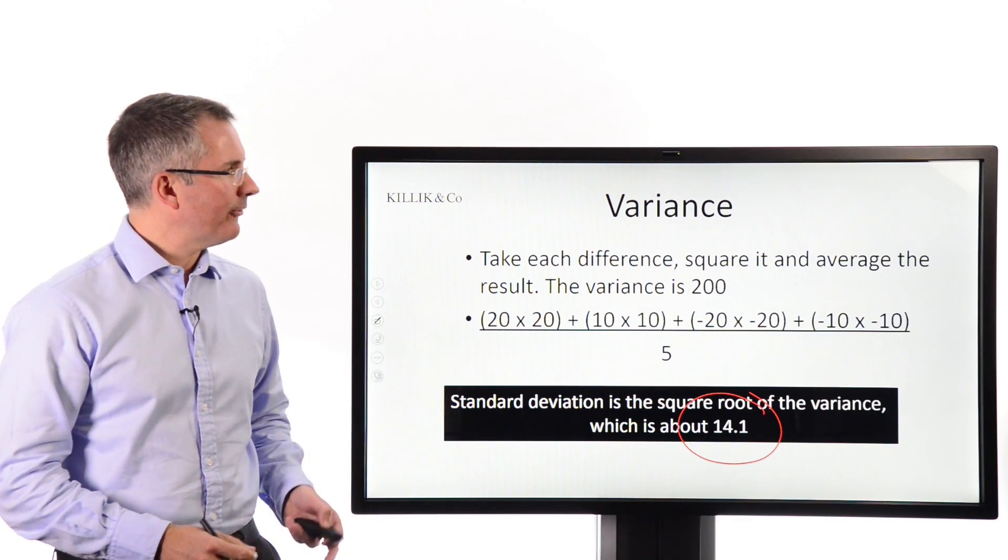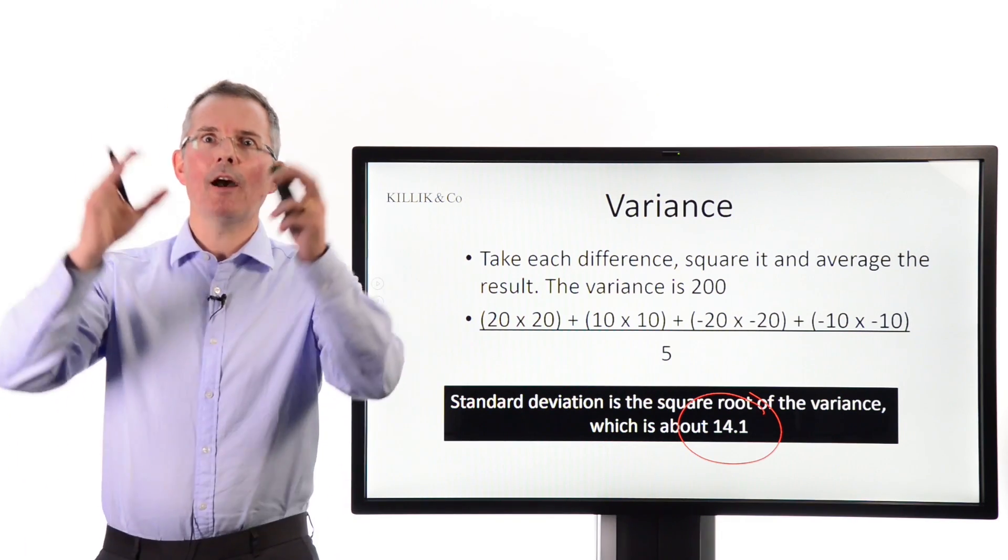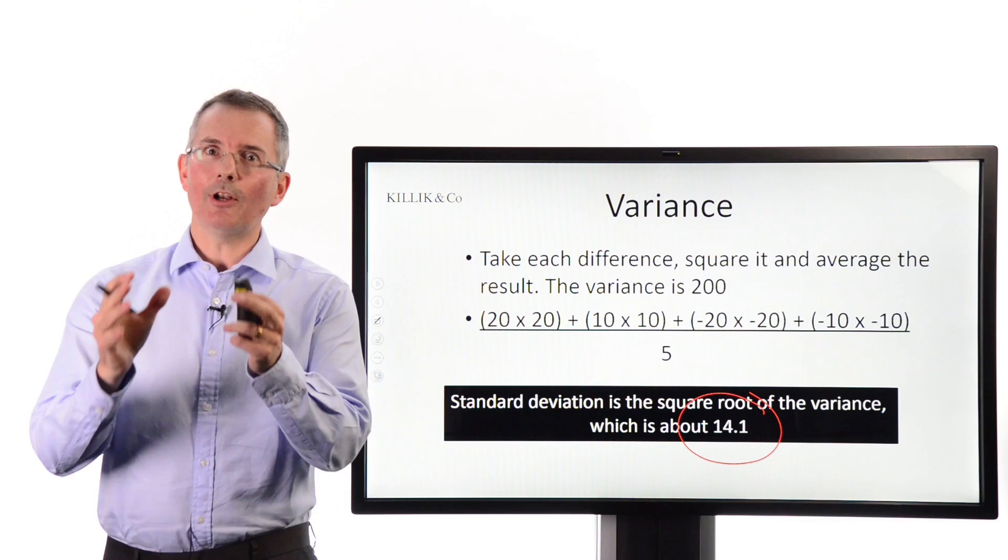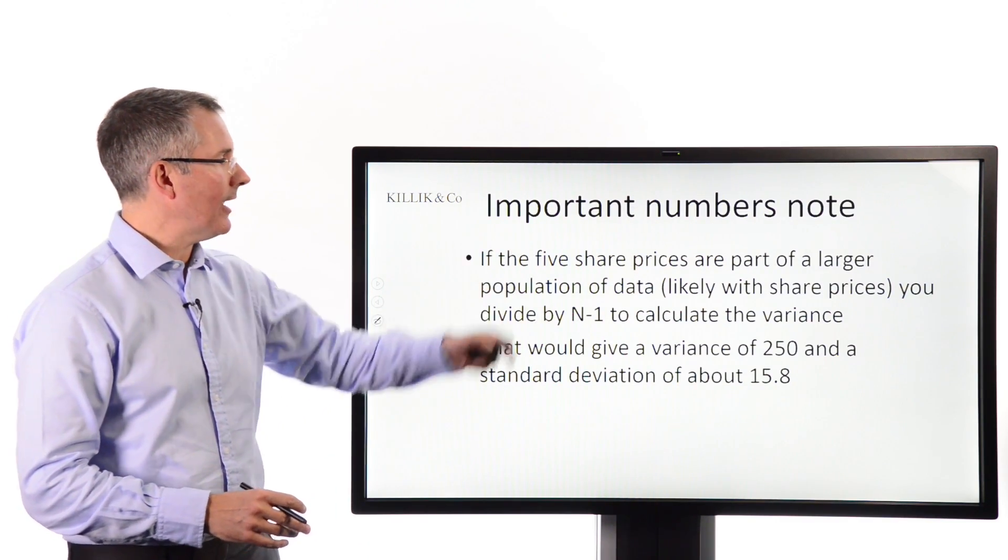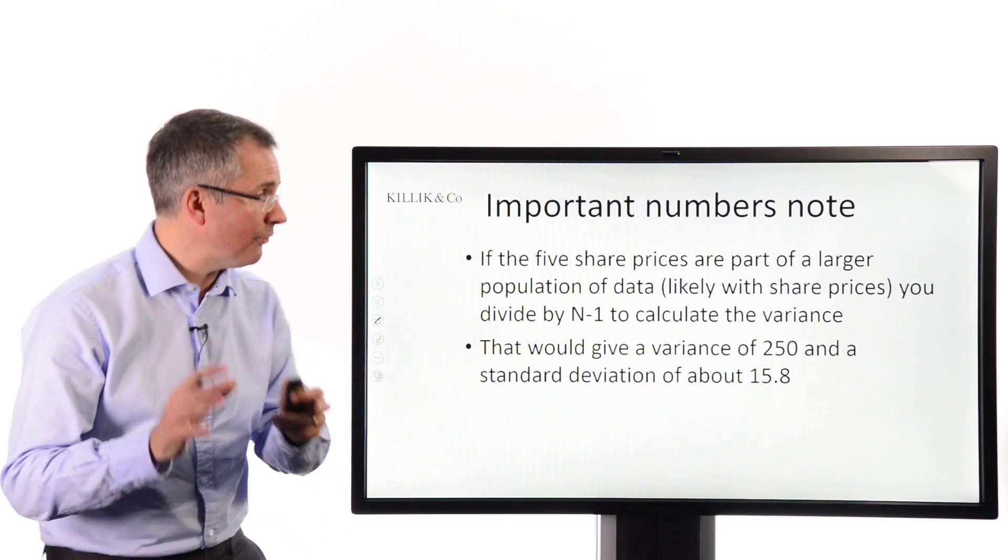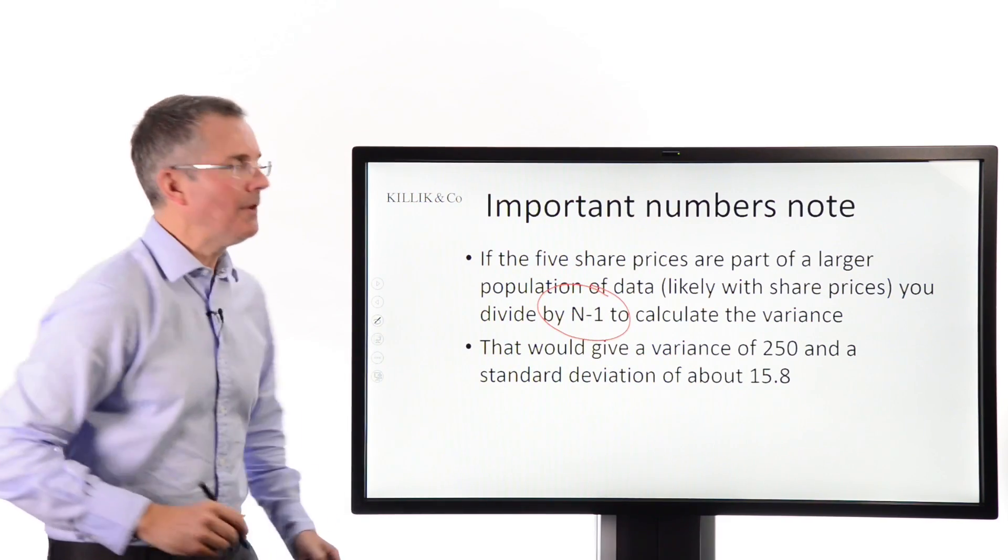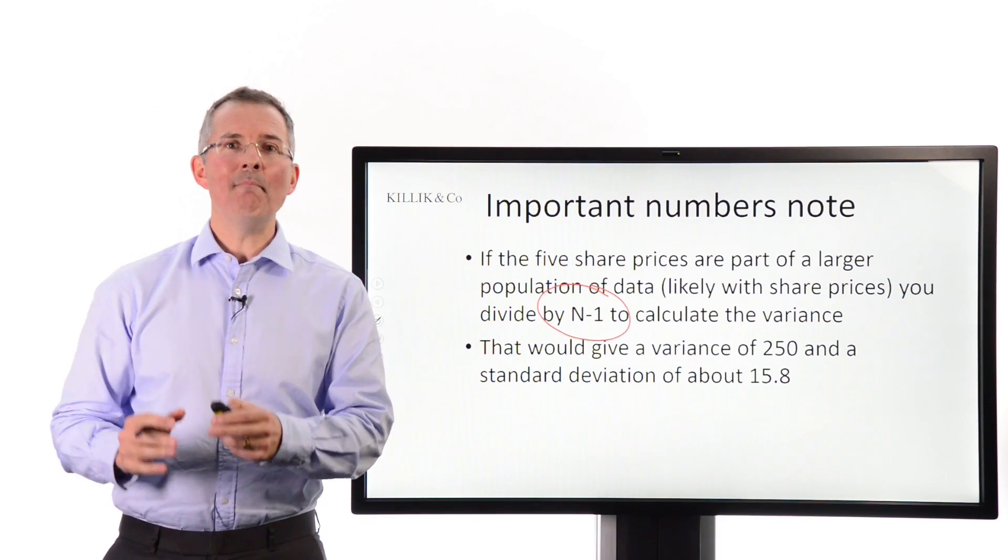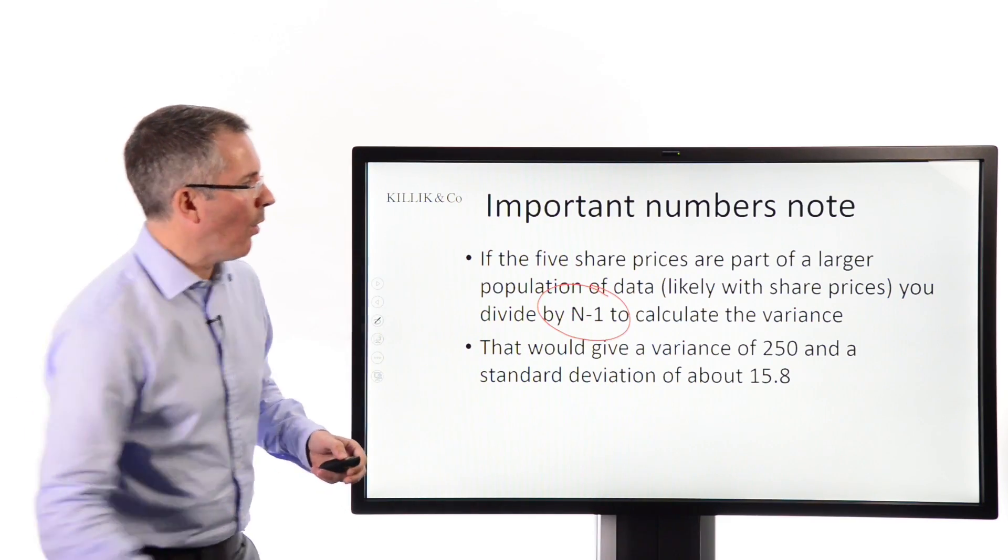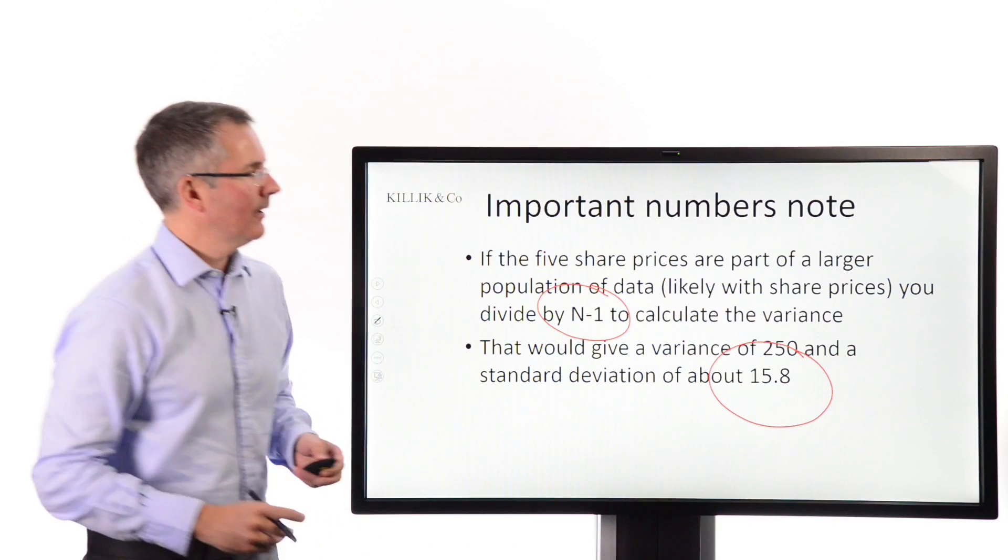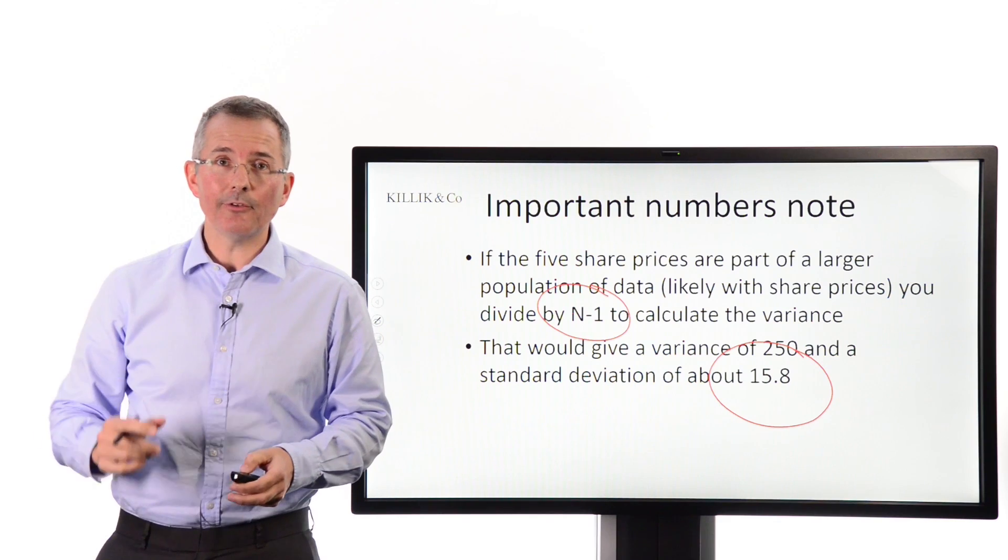Now, purists would say, you're looking at share prices, surely these 5 share prices are part of a much bigger population. This is just a little sample. Well, purists would be right. So technically, if you are dealing with a sample that's part of a larger population, just note that you should technically divide by n minus 1. That just solves a mathematical issue with the mean, which isn't perfect in my example. And that would give you more like 15.8, the square root of 250. So not a huge difference, but technically there is a difference there.